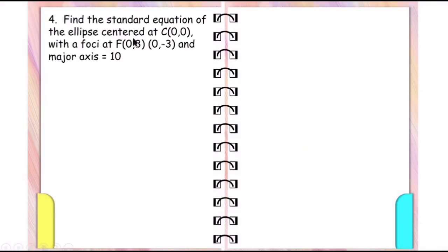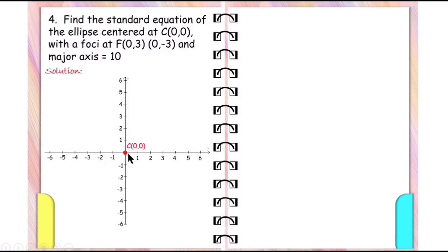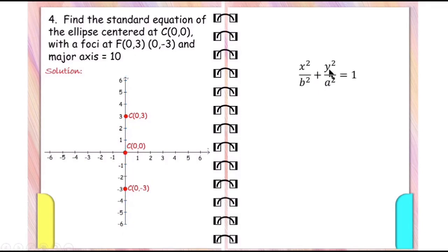Another example: Find the standard equation of the ellipse centered at the origin with foci at (0, 3) and (0, -3), and major axis equals 10. First, determine the principal axis. The center is at the origin; (0, 3) and (0, -3) are the foci on the y-axis. So we use the equation x squared over b squared plus y squared over a squared equals 1, since the denominator of the y squared term is greater. Since we have the foci, c is equal to 3.